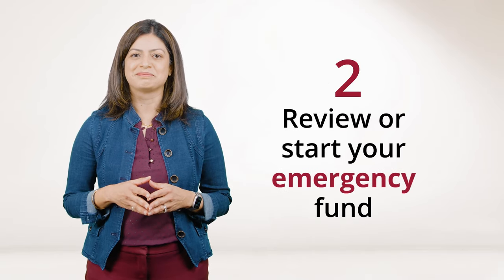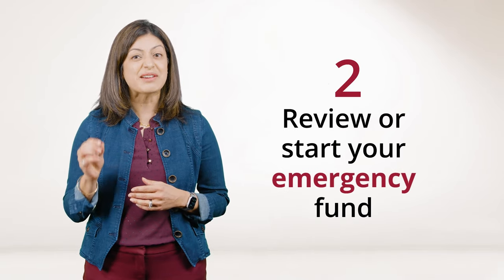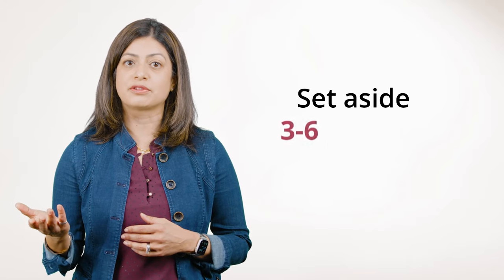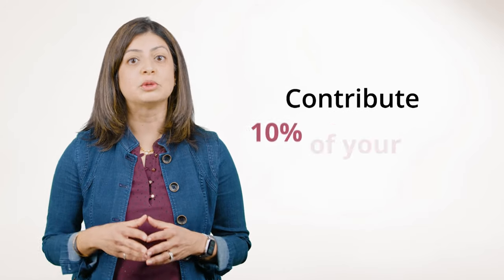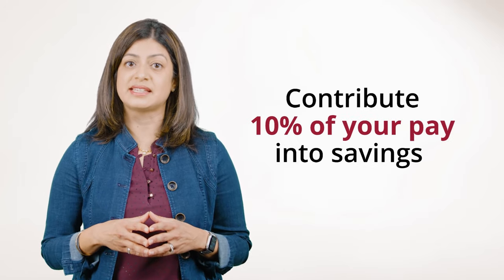Number two, review or start your emergency budget. When it comes to savings, every little bit helps. You'll hear experts recommend that you have enough cash set aside to cover your family's expenses for three to six months or contribute 10% of your pay into savings. If this feels out of reach, remember that everyone has to start somewhere. If you're not able to contribute 10% of your pay into savings, try starting with five or even two percent to get started.